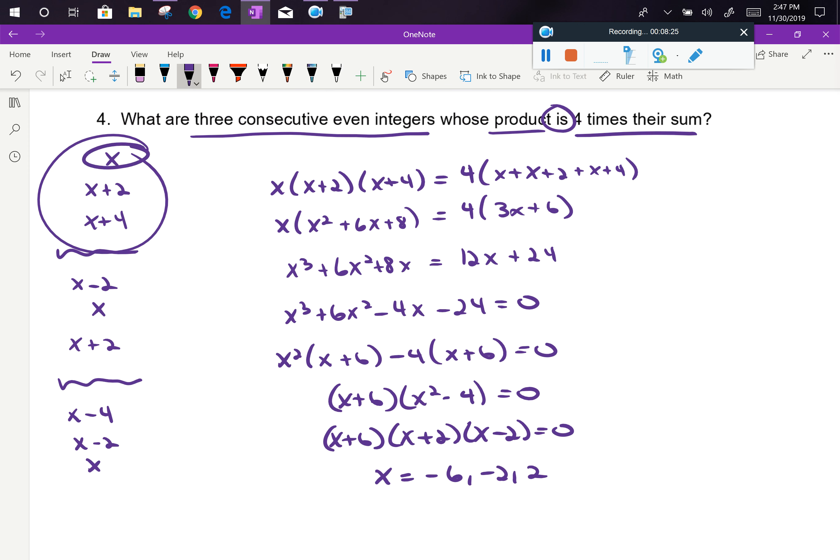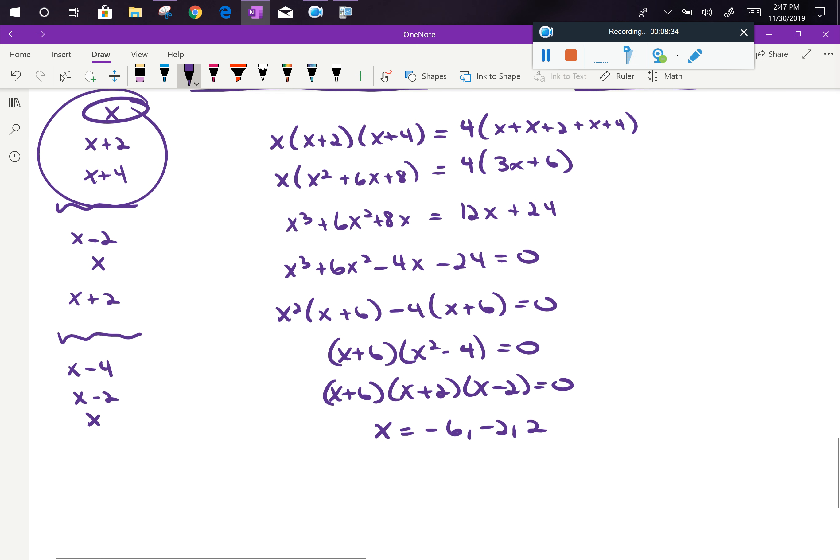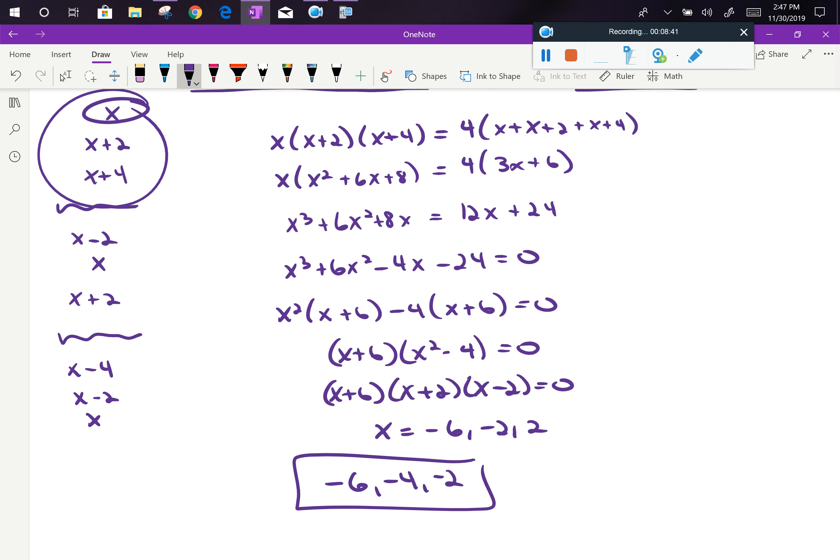So there's actually three sets of consecutive even integers, which all satisfy the parameters of this problem. So one set starts at negative 6. So negative 6, negative 4, and negative 2. That's one set of three numbers.